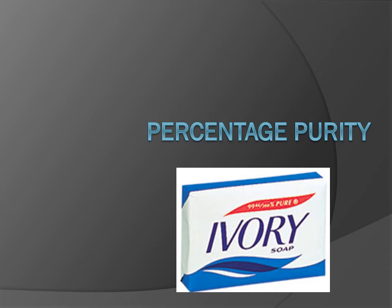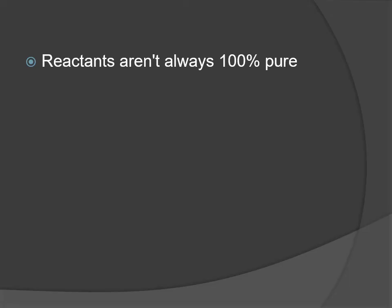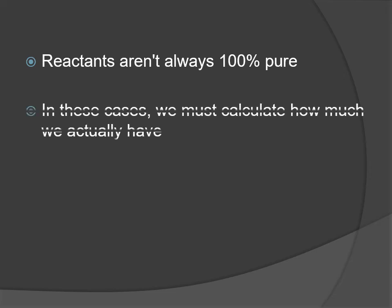Percentage purity is the same idea in that you use a percent calculation, but instead of looking at the product side, you're looking at the purity of the reactants going in. Rather than doing it at the end of the reaction, you do it at the beginning. It's very impossible to get anything 100% pure — there will always be some other things in there. If you know the purity, you can factor it into your calculations.